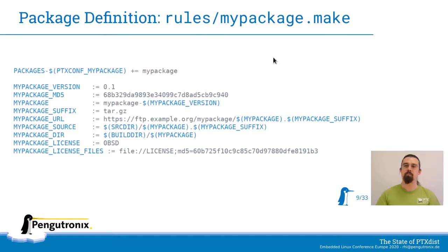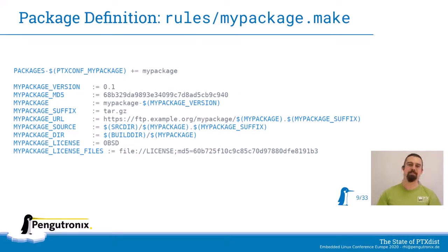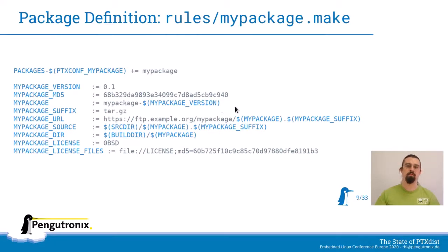Then there's mypackage.make. It starts with a list of definitions as variables: the version, the package name, where you can download it, and also this MD5 sum — because when you download things from the internet, you really want to make sure that they are the right things and there hasn't been any corruption. These are mostly standard and you don't have to change them, except of course for the MD5 sum and the version. You can just use them as generated by the wizard.